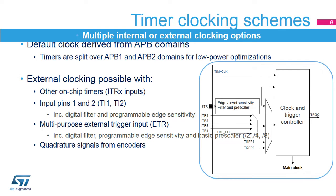External timer clocking allows counting of external events, or to have a counting period externally adjusted. The clock source can be provided by other on-chip timers using one of the four internal trigger inputs, ITR1 through ITR4. The input pins 1 and 2 can also serve as external clocks, with digital filters to remove spurious events. The external trigger input, ETR, can be configured as an external clock with a digital filter, programmable edge sensitivity, and a pre-scaler stage. Quadrature signals from an encoder can be processed to provide a clock and a counting direction.